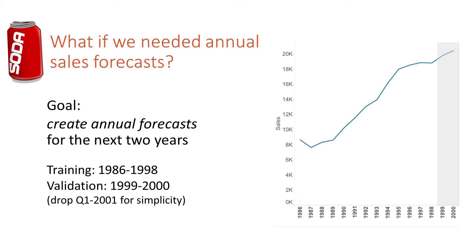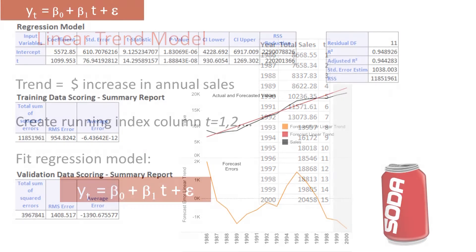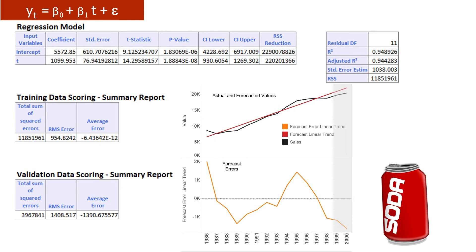The annual time series plot no longer displays seasonality, and a linear trend model seems like a reasonable approximation. Now our linear trend model means that we assume that sales grow by a fixed dollar amount each year. Therefore, the running index now counts years. Here's the regression model that fits a linear trend to the annual sales data.